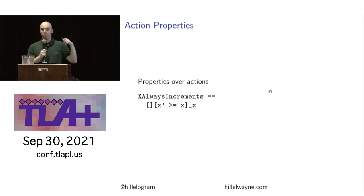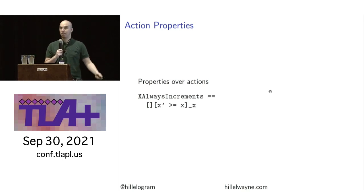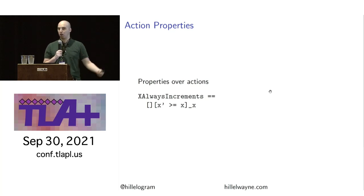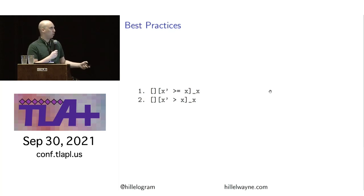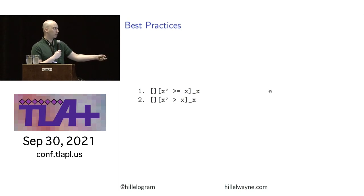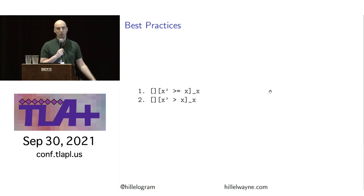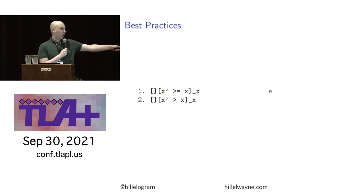If any action we take violates this — say, we accidentally decrement x — it will raise an error. I'd like to point out that these two statements are equivalent: x' >= x or x is unchanged, versus x' > x or x is unchanged. The first has the stutter step implicitly, the second explicitly. Always be explicit — that's why we're writing specs in the first place.